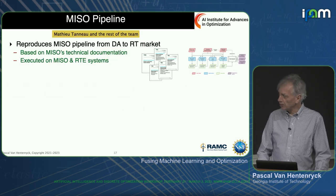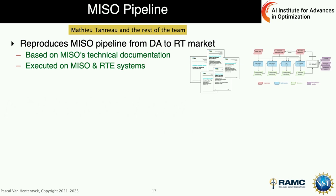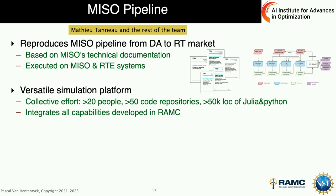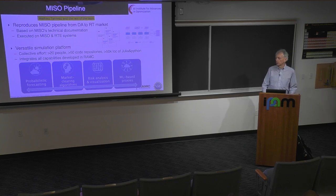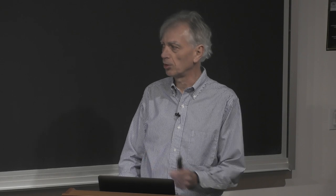Our team built a complete pipeline replicating MISO operations — essentially a digital twin. You have to read thousands of pages of business manuals, plus many undocumented details. It's a big effort: about 50 code repositories, around 50,000 lines of code in Julia and Python. It integrates everything needed to reproduce this pipeline: forecasting algorithms, market-clearing algorithms, risk assessment, and the machine learning algorithms.